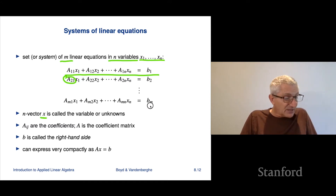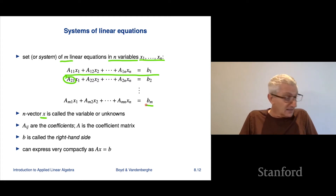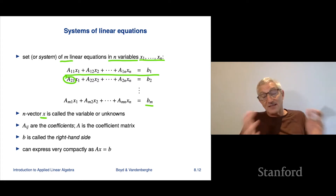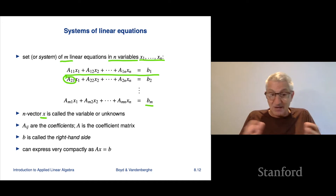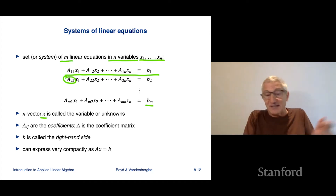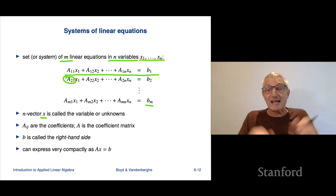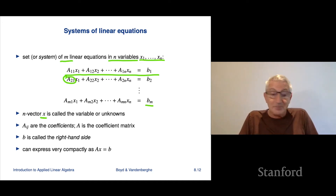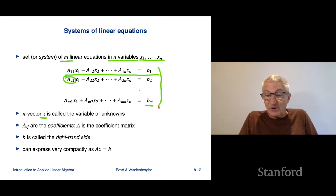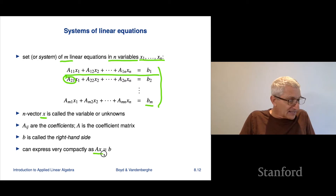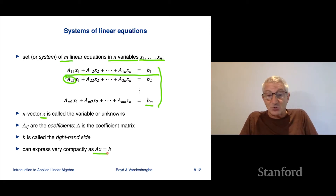The vector b — if I collect the b's into one vector, it's called the right-hand side. That's a bit silly because it could just as well have been the left-hand side, but by tradition it's called the right-hand side. This system of equations can be written in very compact matrix-vector notation as Ax equals b.